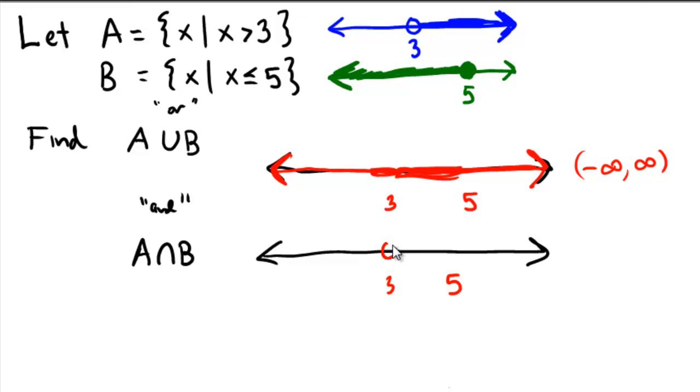The numbers that we'll shade will be 3, 5, and in between, because by looking at both of my number lines, I can see those are both shaded, top and bottom.